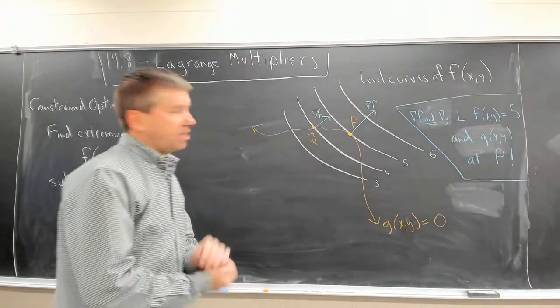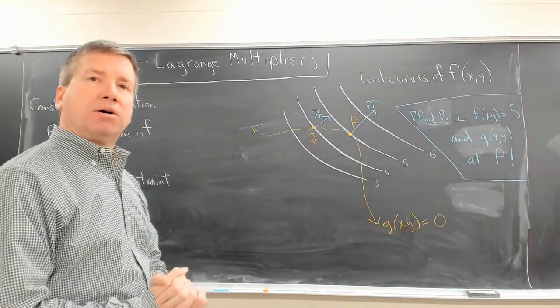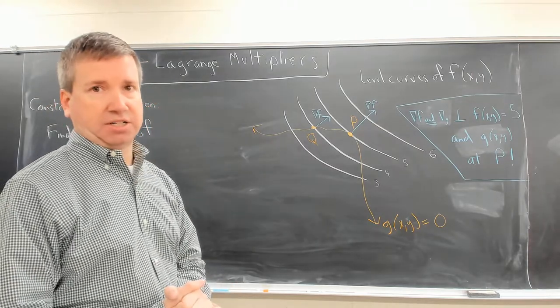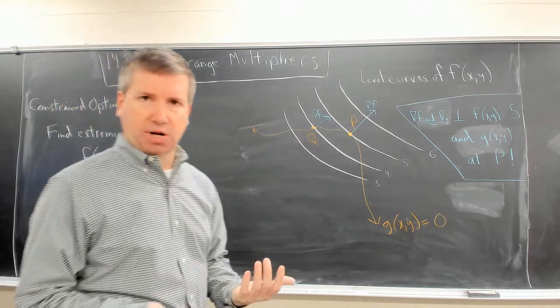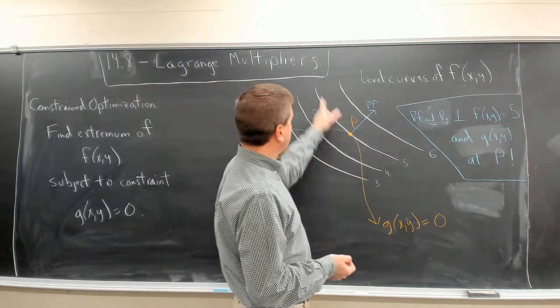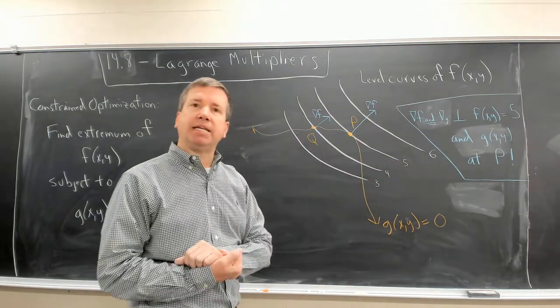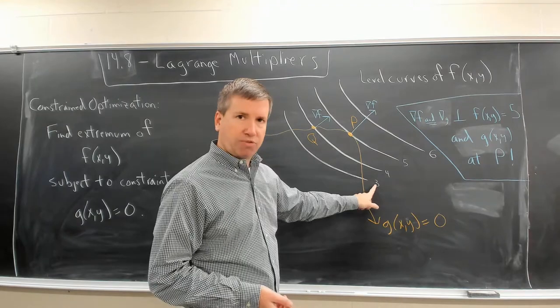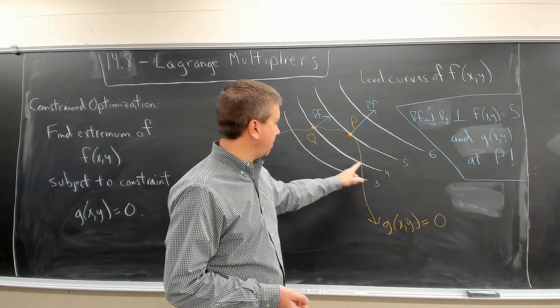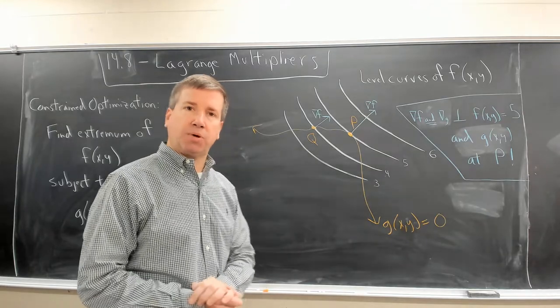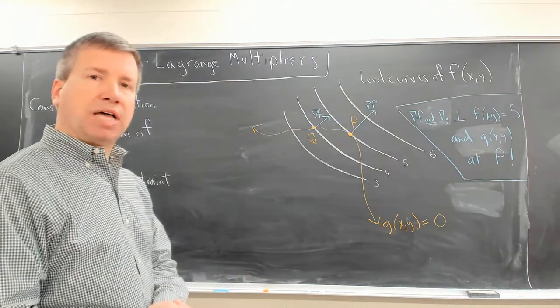Well, I'd like you to take a look over here. The white curves indicate the level curves of our objective function f, the function that we are trying to minimize or maximize. So we have four level curves here. Everywhere along here, the function has a value of 3. Everywhere along here, the function has a value of 4. So on and so forth. The white curves are level curves.